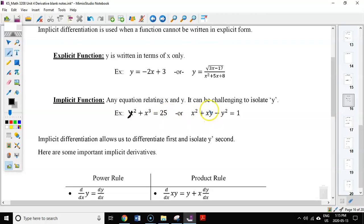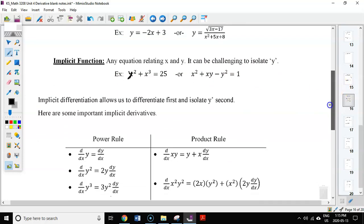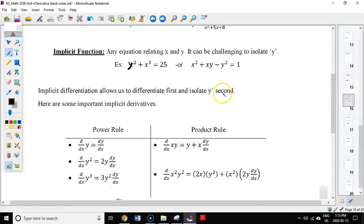This one, much more difficult, you'd have to isolate your y's, factor out your y, and go from there. So what do we do in differentiation when we can't get y equals? Well, implicit differentiation is the process we follow, and it allows us to differentiate first, differentiate the function as a whole first, and then isolate your y prime after. So you don't isolate y at the beginning, you isolate it at the end.